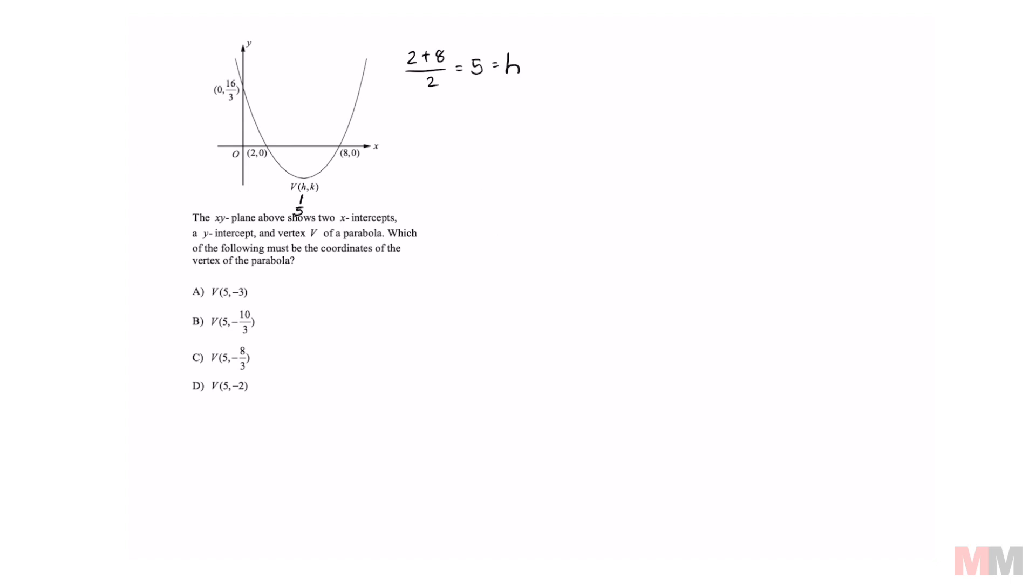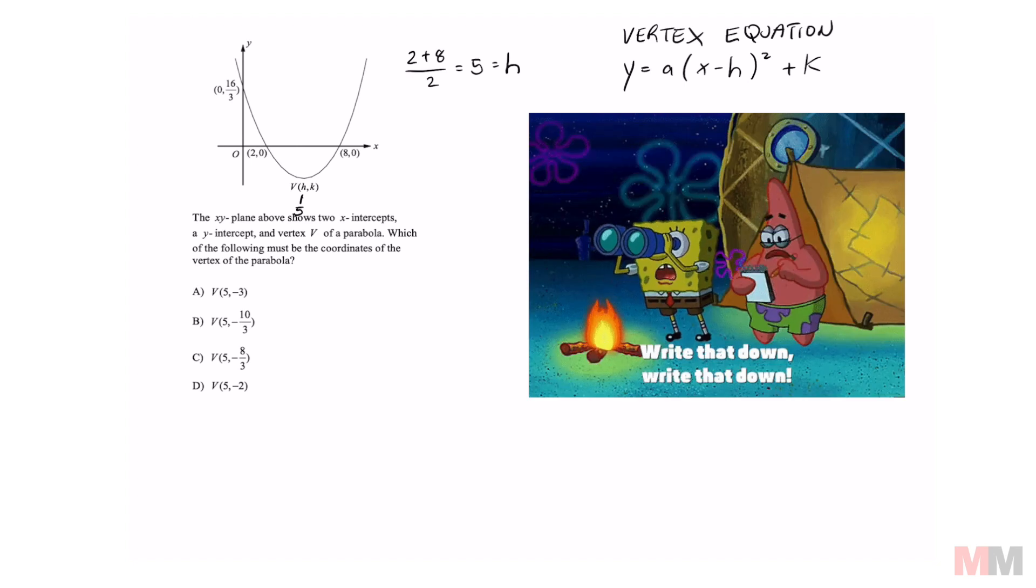Now all we have to do is find k and we got this question answered. If this says vertex then we probably need the vertex equation which is y equals a times x minus h squared plus k. You're going to have to remember that one.